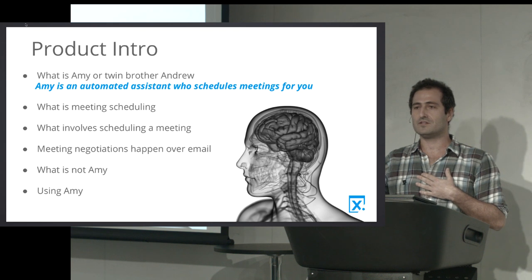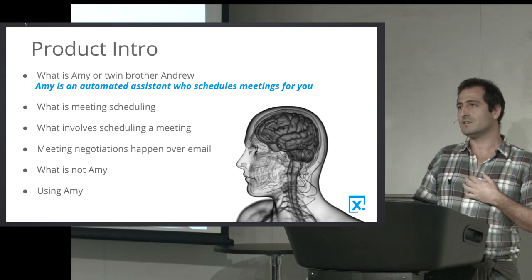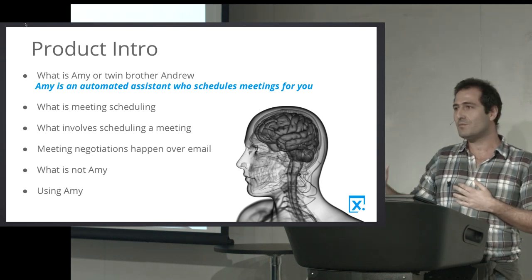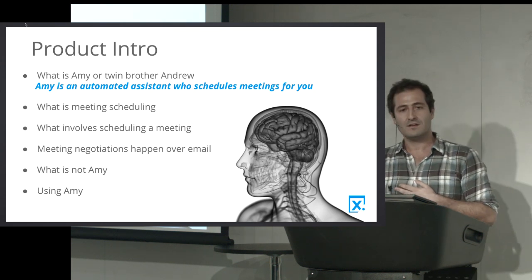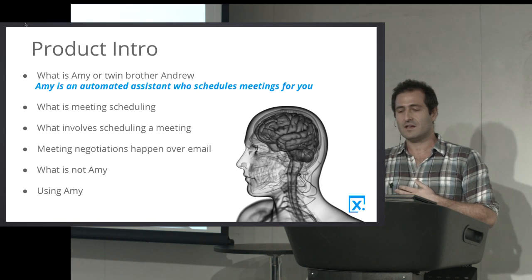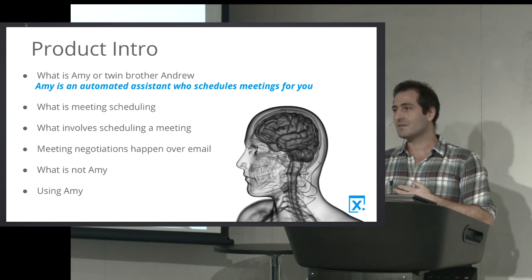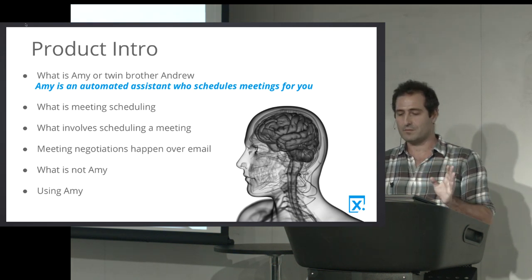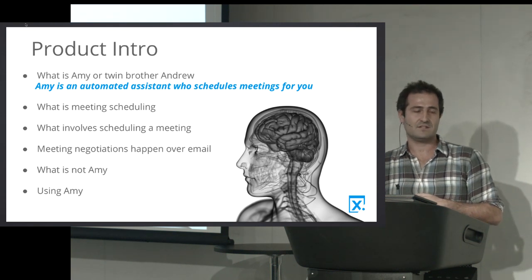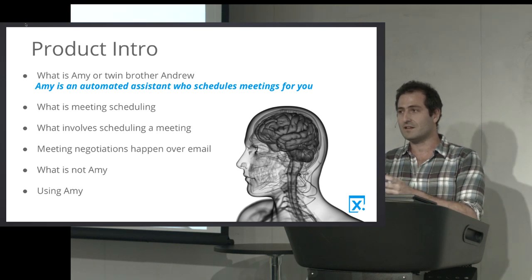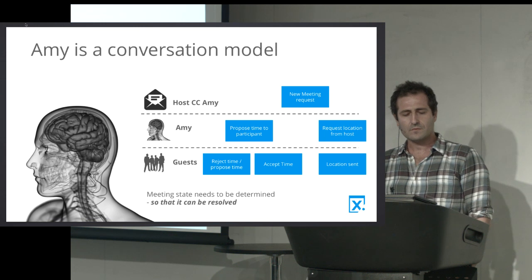Over time, Amy learns your preferences, learns what your calendar is like, and learns how to interact with the people you meet with. It's a novel product with a novel onboarding experience — next time you want to schedule a meeting, just CC Amy. Amy has an email address; you CC her and tell her 'please schedule a meeting with so-and-so for some time next week,' and Amy takes it from there. She'll ask for access to your calendar to make informed decisions about your available spots and preferences. The more information you give it, the better the service — similar to Spotify or Pandora.